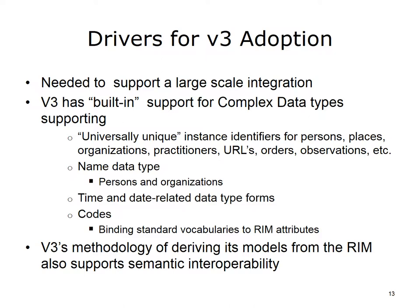Data types that provide precise definition of the constructs of more complicated structures and accommodate differences in the global setting make semantic requirements easier. V3 has built-in support for complex data types supporting universally unique instance identifiers for persons, places, organizations, practitioners, URLs, orders, observations, etc. Name data types such as persons and organizations, time and date-related data type forms, and codes binding standard vocabularies to RIM attributes are all supported. V3's methodology of deriving its models from the RIM supports semantic interoperability. Increased use of the RIM supports more widespread adoption.